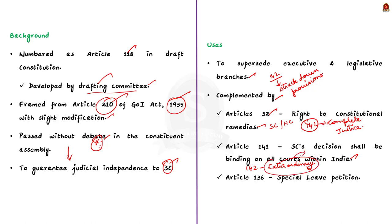Then comes Article 136, which talks about the Special Leave Petition. A Special Leave Petition holds a prime place in the Indian judicial system because it provides the aggrieved party a special permission to be heard in the Apex Court in appeal against any judgment or order of any court or tribunal in the Indian territory. Thus, this complements the Supreme Court to use its powers under Article 142, that is, the enforcement of orders or decrees.